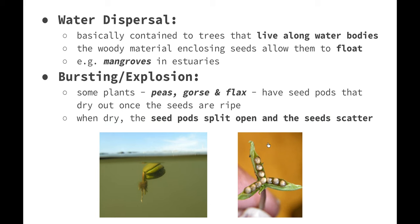Seeds can also be dispersed by water, mainly in trees that live along water bodies. The woody material enclosing the seed changes its density, allowing it to float. Mangrove seeds are a perfect example — mangroves live in estuaries where water constantly moves in and out, so seeds can float and begin germination in water, then get deposited in the mud as the water level drops. Another form of seed dispersal is bursting or explosion: plants such as peas, gorse, and flax have seed pods that dry out once seeds are ripe, split open, and scatter seeds to be further dispersed by animals or wind.